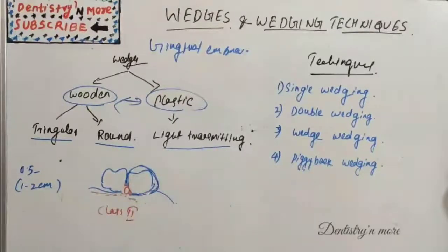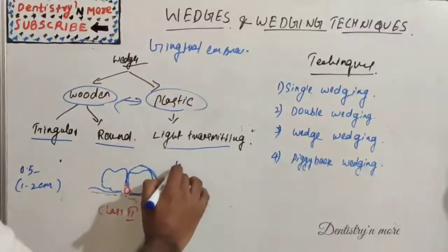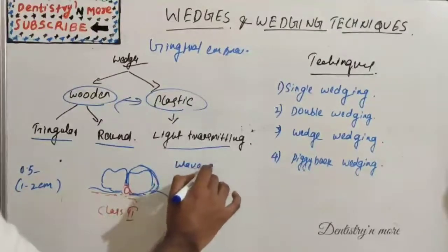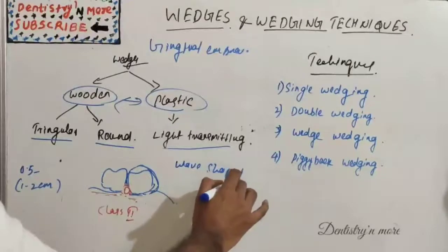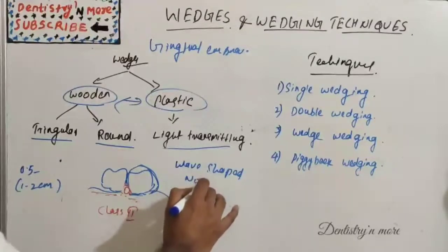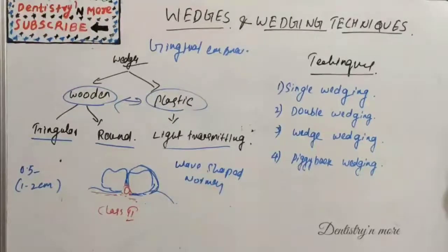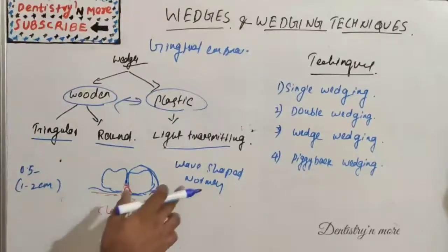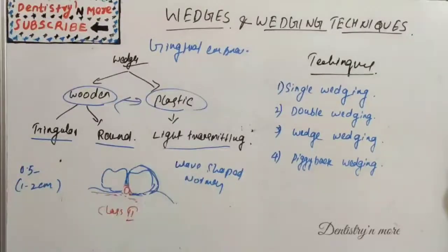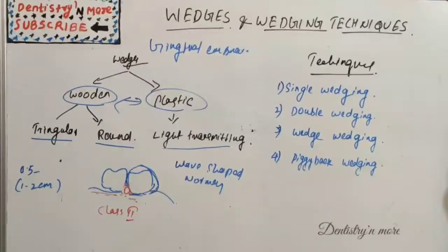Plastic wedges come in two subtypes: normal wedges and wave-shaped wedges. Normal wedges are similar to wooden wedges in shape and use. The wave-shaped wedge's curve helps in easy placement and proper seal of the buccal and lingual embrasures without impinging the gingiva.